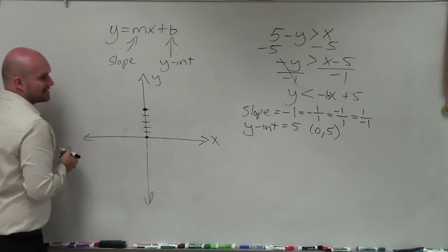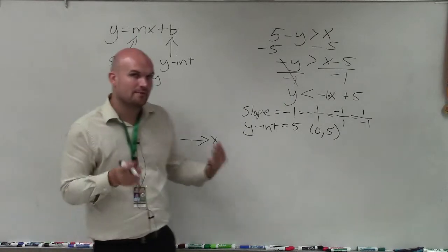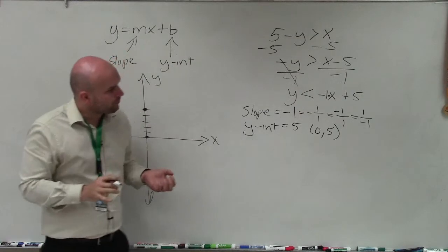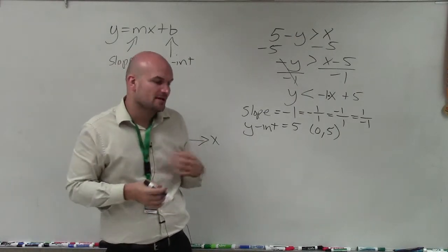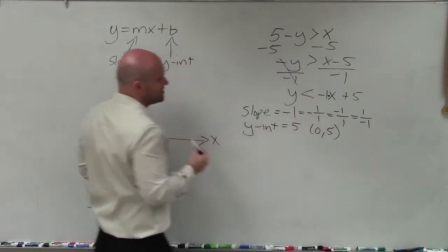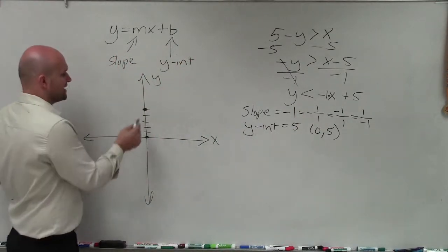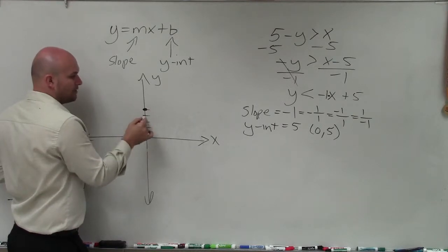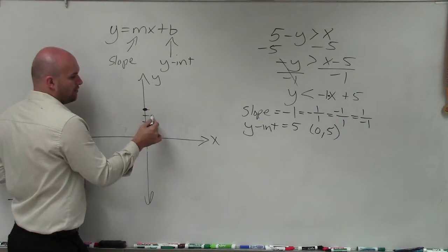I'm going to make a nice big dot. Now the slope, remember, is the ratio between the change in the y-coordinates and the change in the x-coordinates between any two points. So let's look at this ratio. If the change in the y-coordinates between any two points was negative 1, from my y-intercept, that means the next point is going to be down one unit. And if the change in the x-coordinates is positive 1, I'm going to go over one unit.